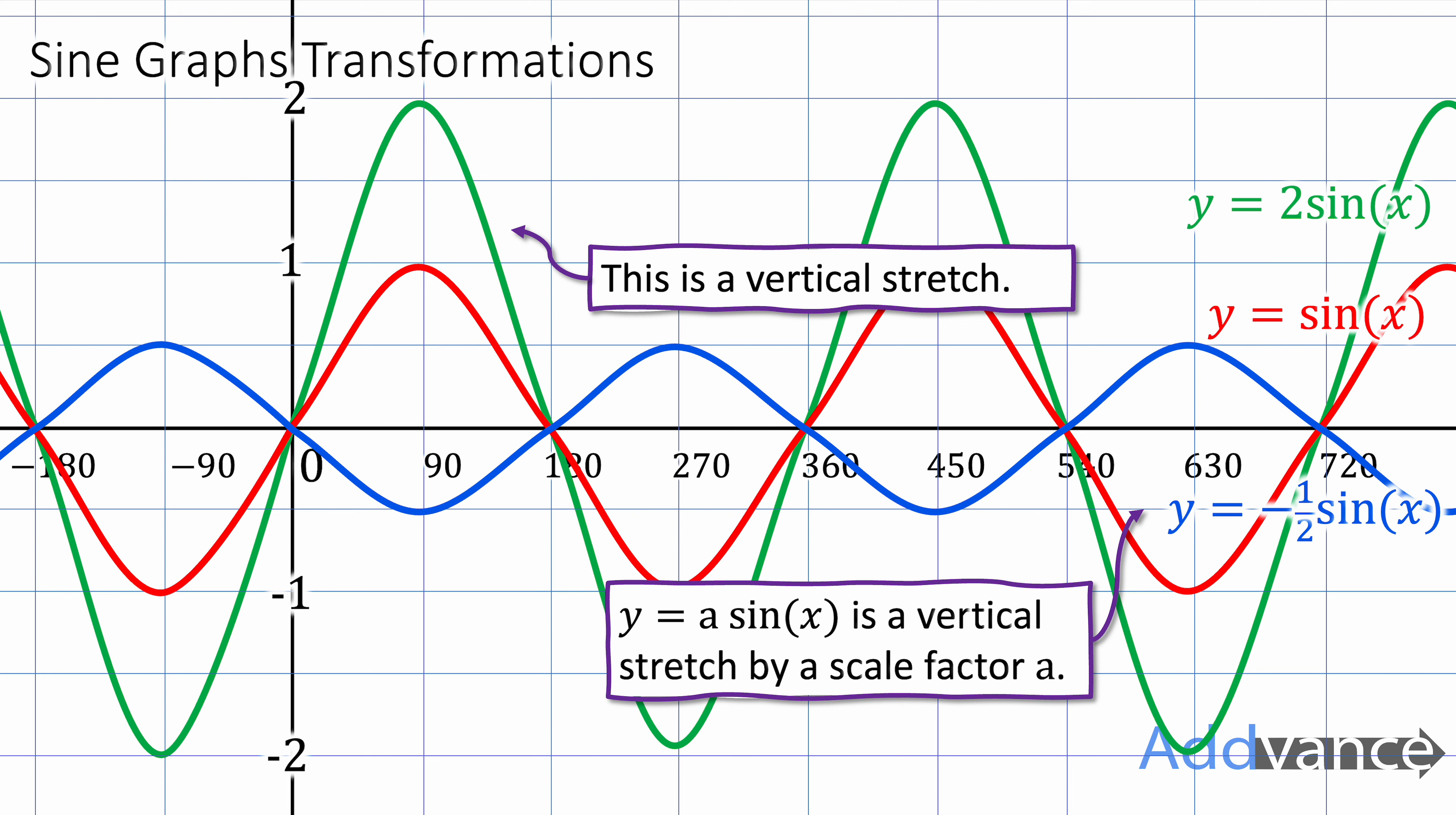Or we could also do y equals minus a half sin of x and that reflects it and then squashes it by a scale factor of a half. So you can multiply the sine by a number and that is effectively a vertical stretch by a scale factor of that number.